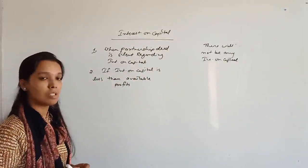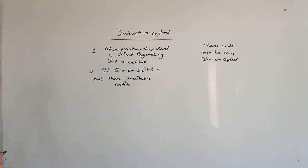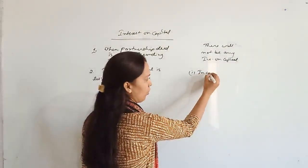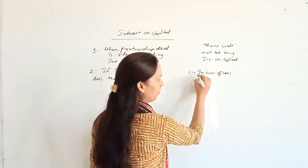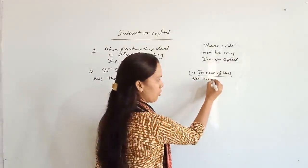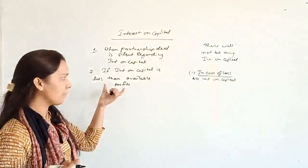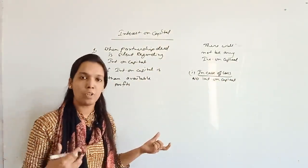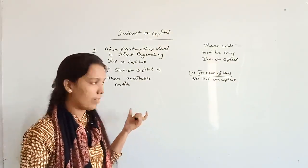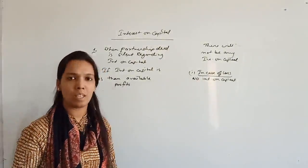But if there is a loss, no interest on capital will be given to the partners. In the case of loss there are three sub-conditions. If there is a loss, no interest on capital is given because, in the absence of any specific provision, we assume it is appropriation of profit — so where there is appropriation of profit and a loss, no interest is given.